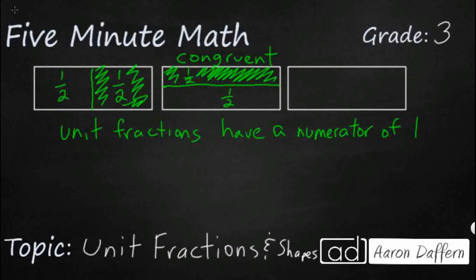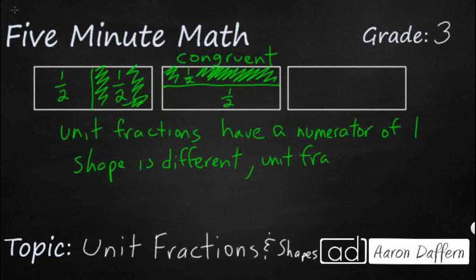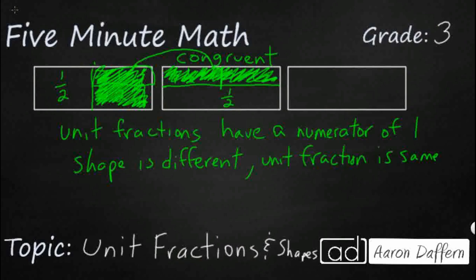The shape of each piece is different, but as long as we started with the exact same shape — and remember, these rectangles are exactly the same — the unit fraction is the same. So this top part here is actually equal to this piece over here, even though they're different shapes. If you imagine taking one part and moving it over, you can see how they work together. These are two congruent unit fractions even though the shapes are completely different.